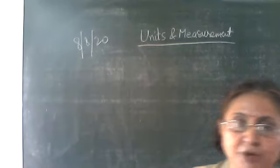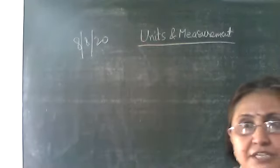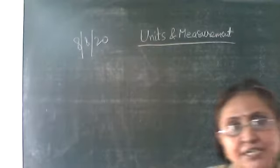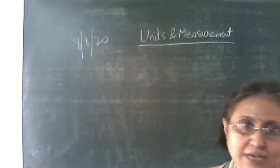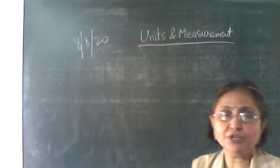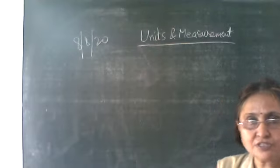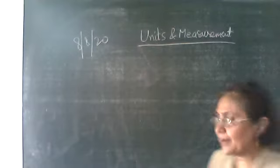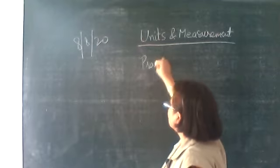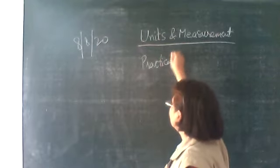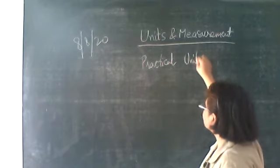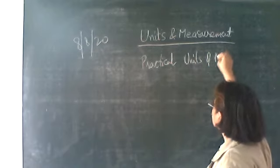We have discussed SI units. There are seven fundamental units in the SI system and two supplementary units. We have already discussed some practical units of length. Now let's discuss some practical units of mass. The SI unit of mass is kg.